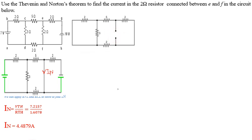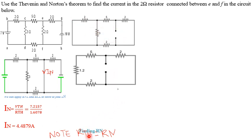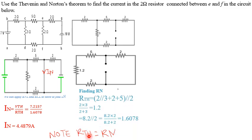Redrawing the circuit to calculate RN, we realize from the examples that RTH = RN — Thevenin's resistance always equals Norton's resistance, no matter the question. So we apply the same principles and get RN = 1.607 ohms. This is Norton's resistance, equivalent to the Thevenin's resistance calculated earlier.